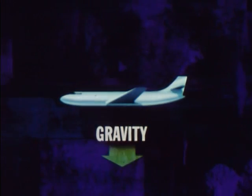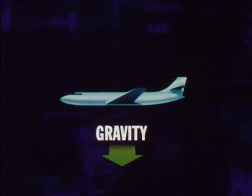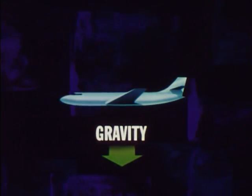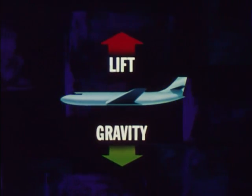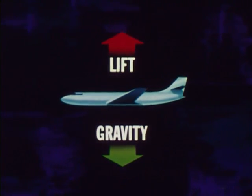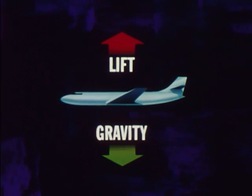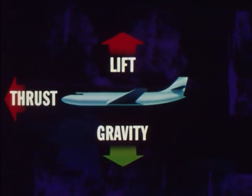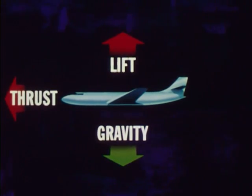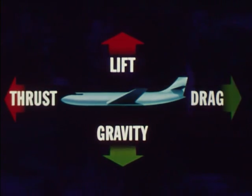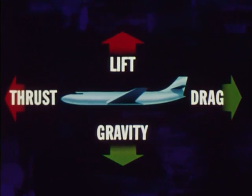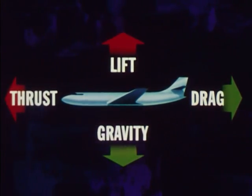The first is gravity. Gravity constantly pulls the airplane toward the ground. The second force is lift. Lift causes the airplane to rise. The forces of lift and gravity work in opposite directions. The third force is called thrust. Thrust causes the airplane to move forward. And the fourth is called drag. Drag includes everything that resists the airplane's forward motion, such as the friction between the airplane and the air it moves through.